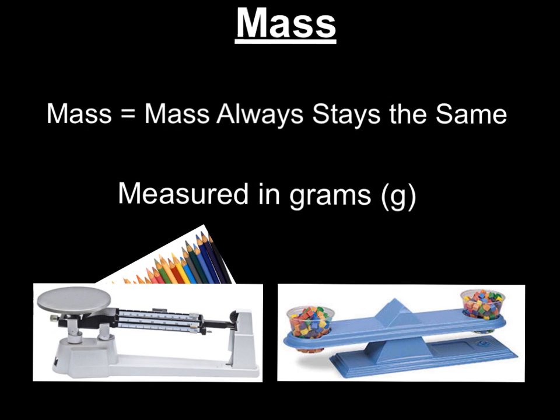Mass is our first measurable property of matter. So we have a saying and you need to remember this: mass, mass always stays the same. Mass always stays the same, no matter where I'm located—Earth, the moon, Jupiter, any asteroid. My mass will stay the same because it's measured in grams, abbreviated with a lowercase g. It doesn't change. It's not affected by anything, so no matter where I'm located, my mass stays the same.